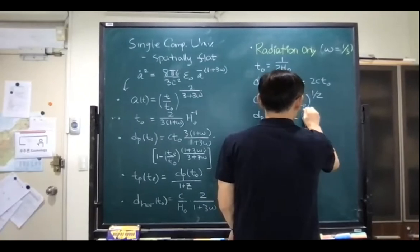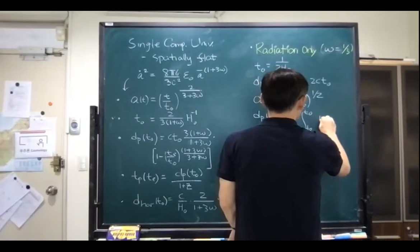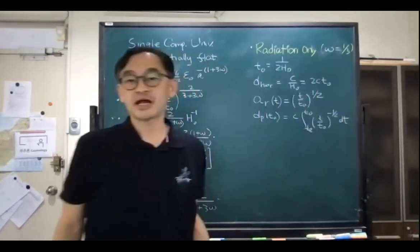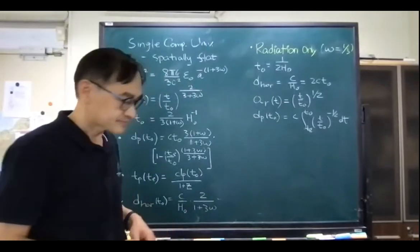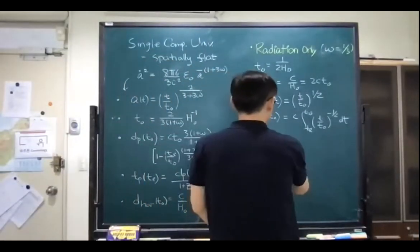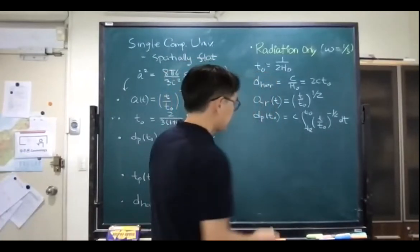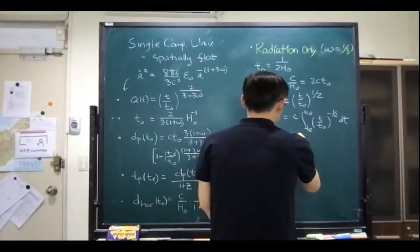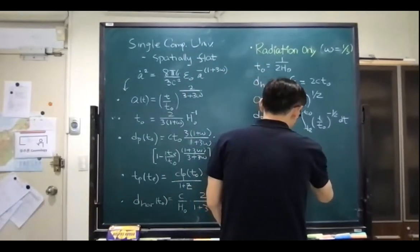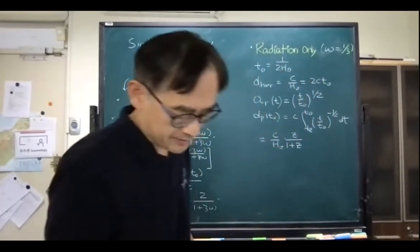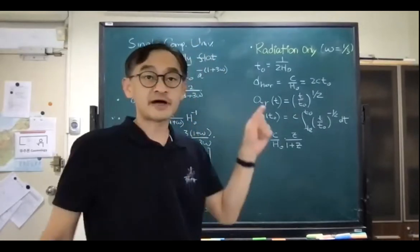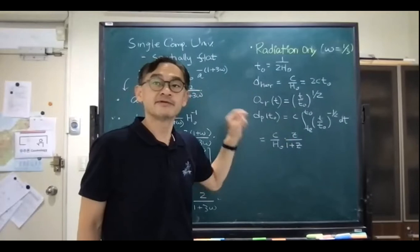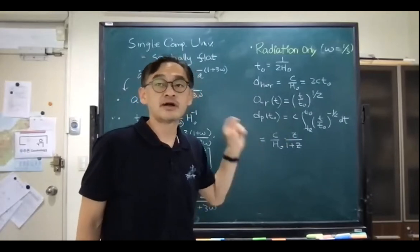So the scale factor for radiation: a(t) = (t/t₀)^(1/2). We had two-thirds for matter-only; now for radiation we have time to the power of 0.5. And calculating the proper distance directly by definition, this will give you d_p = c/H₀ × 1/√(1+z).